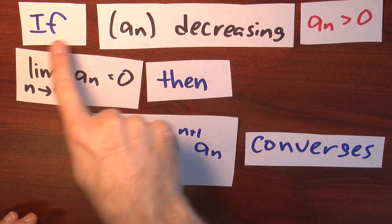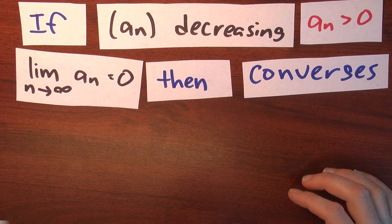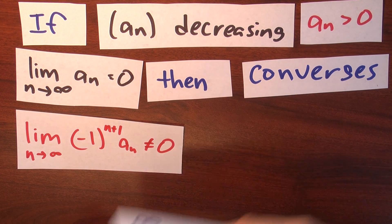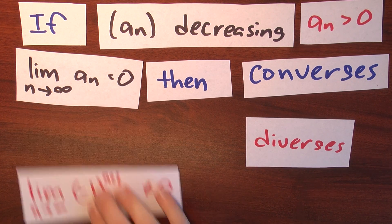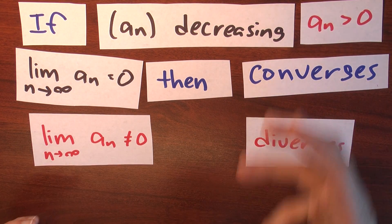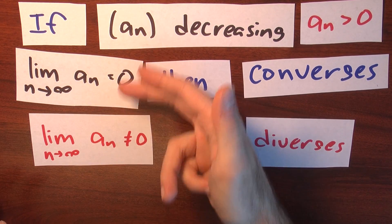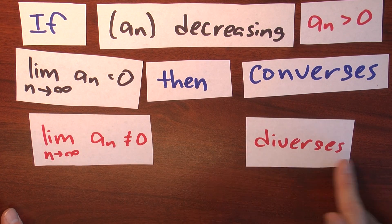Alternating series form a class of series for which the limit test is practically the whole story. If the limit of a_n is 0, then this series converges. But we already know by the limit test that if the limit of the nth term of this series is non-zero, then the series diverges. So for alternating series, just determining the limit of the nth term tells the whole story: if that limit is 0 the series converges, and if it's non-zero the series diverges.